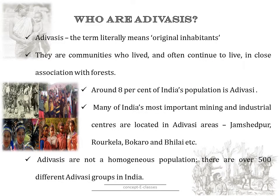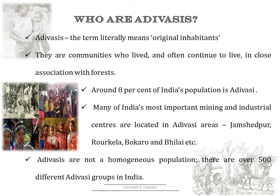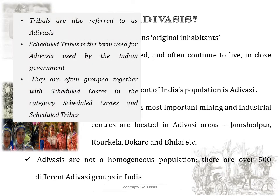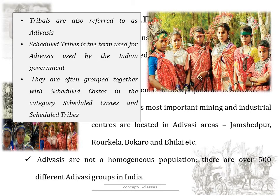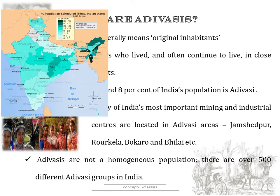As said earlier, in this chapter we will study about two communities considered to be socially marginalized in India. The first one are the Adivasis. The term Adivasis literally means original inhabitants. They are communities who lived and often continue to live in close association with the forest. The tribals are also referred to as Adivasis, and 'scheduled tribes' is the term used for Adivasis by the Indian government. Around 8% of India's population is Adivasi, and many of India's most important mining and industrial centers are located in Adivasi areas like Jamshedpur, Rourkela, Bhilai and Bokaro.